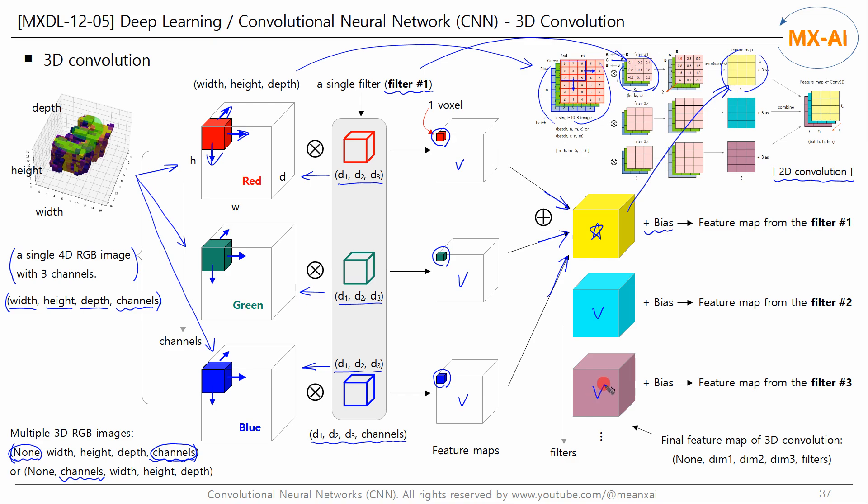The second and third filters also generate their own feature maps. Combining these feature maps into a single 4D structure produces the final feature map, which is the output of the 3D convolutional layer. This has the same dimensions as the input image. The last dimension is the number of filters.